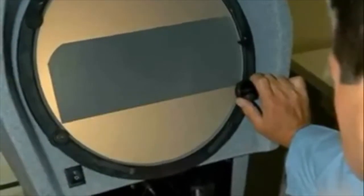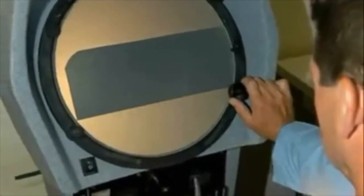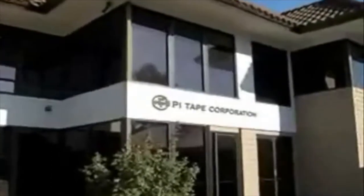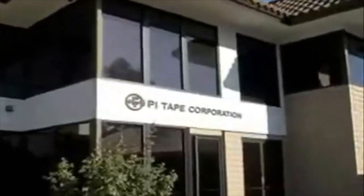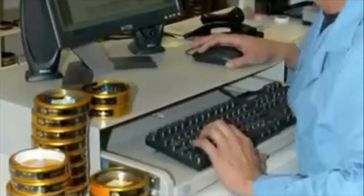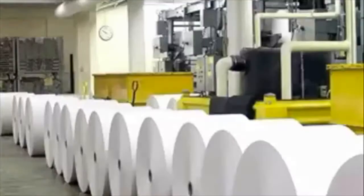PiTape gauges are calibrated at 68 degrees Fahrenheit and are guaranteed to 0.03 mm up to 3,600 mm. Each tape comes with a calibration report traceable to the National Institute of Standards and Technology.